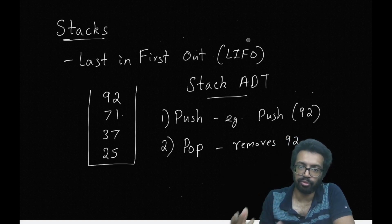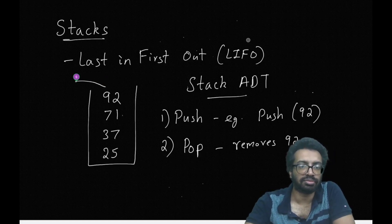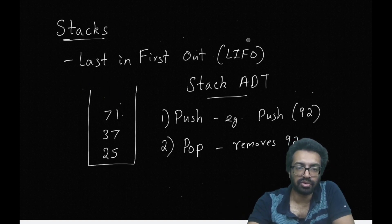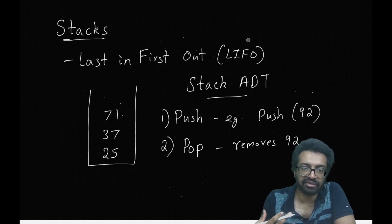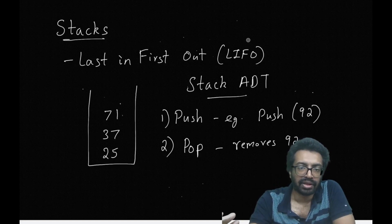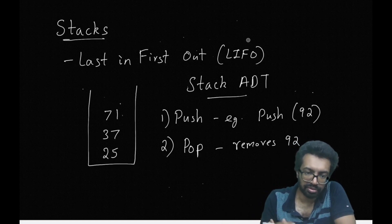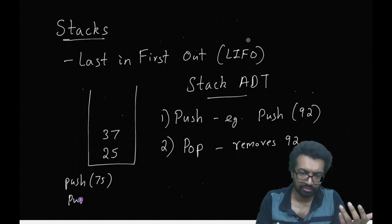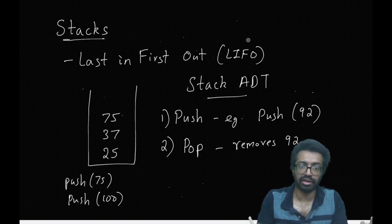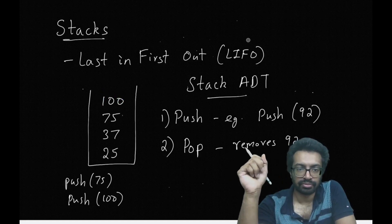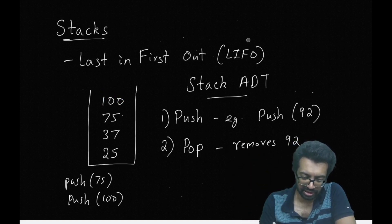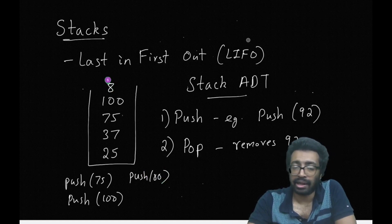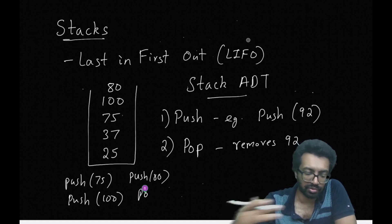When you pop from the stack, you remove 92. If you pop once more, you pop out 71 because the pictorial representation shows that 71 had come just before 92. Now applying push 75 and then push 100: 75 comes on top, then 100 comes on top of that. I can push one more — push 80 — 80 comes on top. And if I pop now, 80 is removed.